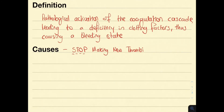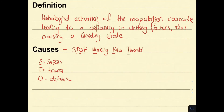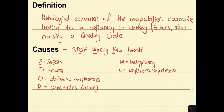The causes of DIC can be remembered using the mnemonic 'Stop Making New Thrombi.' These include sepsis, trauma, obstetric complications, acute pancreatitis, malignancies, nephrotic syndrome, and transfusions.